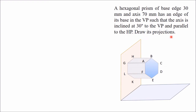We have to draw its projections. In the case when axis is inclined at 30 degrees to the VP, in its simple position we will keep the axis perpendicular to the VP. We also have to keep one of the bases of the solid in the VP because one edge of its base is in the VP. In projection of a solid, we will draw that view first where the true shape of the base is visible. Here, true shape of the base is visible in the front view, so we will draw the front view first.